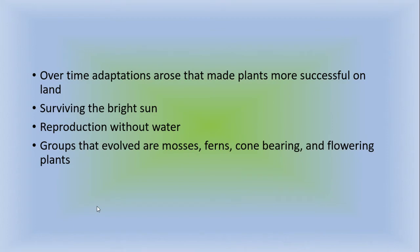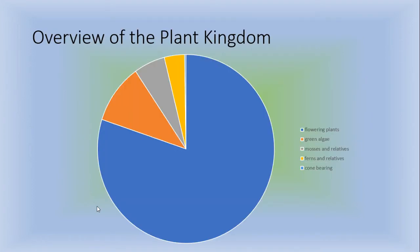Over time adaptations arose that made plants more successful on the land, surviving the bright sun for example, being able to reproduce without water. So plants used to release the sperm and the egg into water and they would use that water to allow them to meet up. Their sperm had little flagella on them so they would swim around to find eggs. And groups that evolved are mosses, ferns, cone bearing plants, and flowering plants. Just a brief overview of the plant kingdom. We'll get more into taxonomy later on. You can see that the flowering plants actually take up the biggest area here. Green algae is right in this area. Mosses is going to be over here. Ferns and their relatives. And then cone bearing plants is this tiny little piece right here.